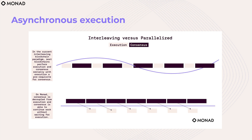So we do consensus on block one, then start doing consensus on block two while doing execution on block one. A couple of things to point out: all the nodes are agreeing on the official ordering of transactions, which means if they start from the same state and agree to do the same work, they should continue to be in the same state. When nodes come to agreement about the official ordering, the actual state is finalized — everything is deterministic.